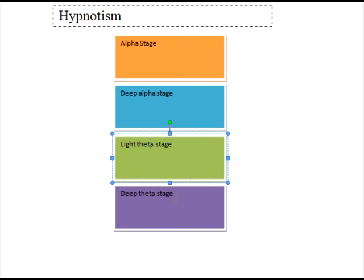Going deeper into core hypnosis, we reach the deep theta stage. In this stage you can access your true potential — someone can ask you what you're good at and you can communicate your inner potential, getting to know your strengths and weaknesses. It's like going inside your brain and finding out what you're made of. The alpha stage is for starters, deep alpha to reduce stress, light theta for auto-suggestions and breaking negative loops, and deep theta to understand true potential by accessing the subconscious mind.